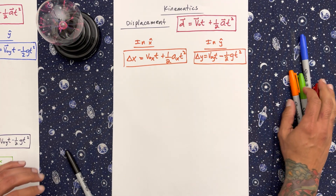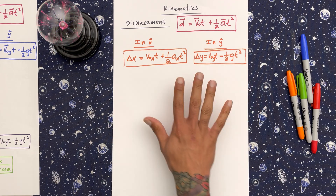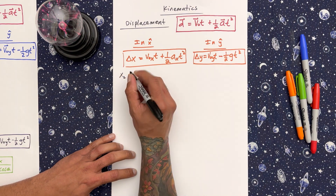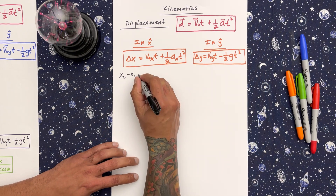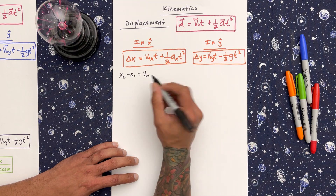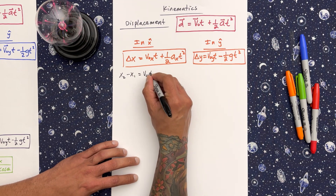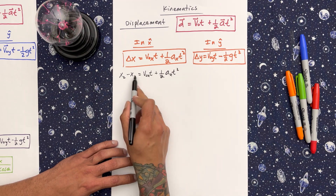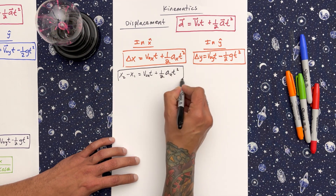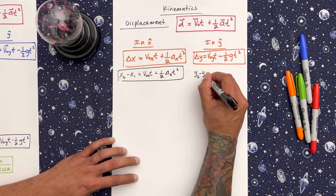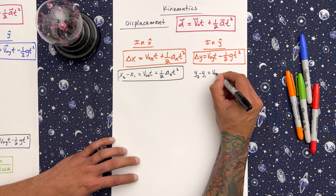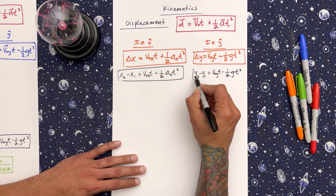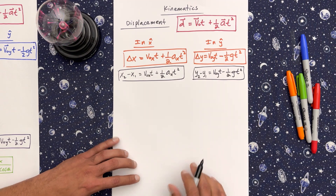Now let's untangle the notation a bit. The change in x means x-final minus x-initial, so: x-final minus x-initial equals velocity initial in the x direction times time, plus one-half acceleration in the x times time squared. Similarly, y-final minus y-initial equals velocity initial in the y direction times time, minus one-half g t squared.